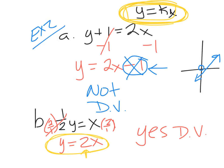What's another name for what k is, besides slope? It's in your notes — constant of variation. Very good.